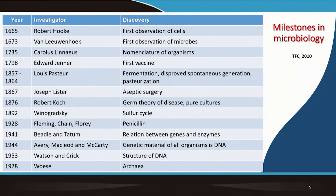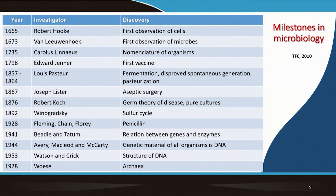Now let's look at some major milestones in the history of microbiology, a discipline that has matured over the last 300–350 years. The first milestone was in 1665 when Robert Hooke was able to observe cells. Then in 1673, Van Leeuwenhoek invented a hand-held microscope and made observations of microorganisms — his drawings are still referenced today. In 1735, Carolus Linnaeus established the nomenclature for organisms that we still use today.